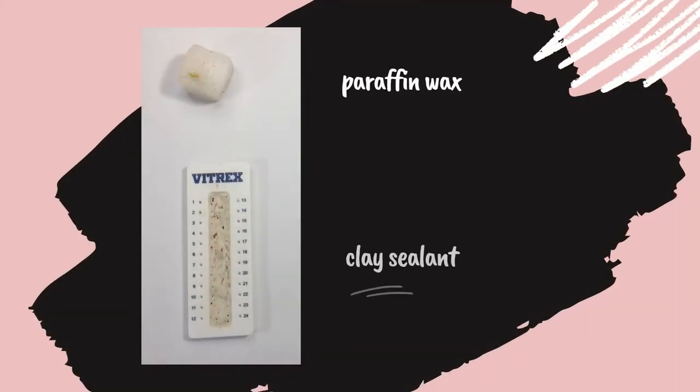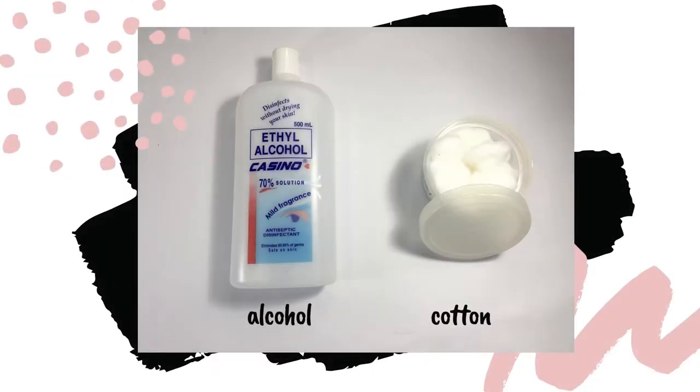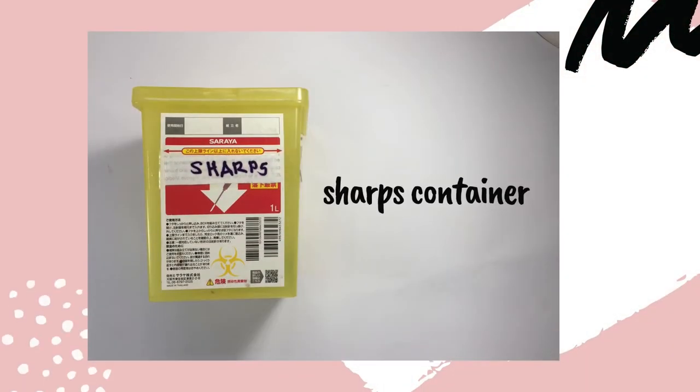Next, paraffin wax and clay sealant to prevent the sample from spilling. We also need alcohol and cotton for disinfecting the puncture site, and lastly, a sharps container for disposal of used lancets.